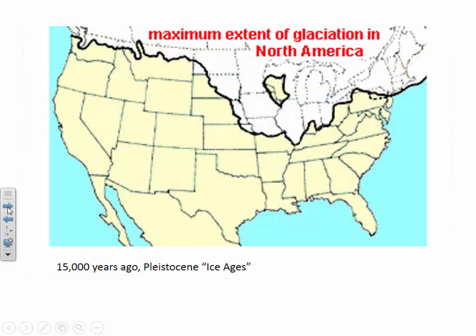The story of Edinburgh Lake begins during a period of time known as the Pleistocene by geologists, but commonly referred to as the Ice Ages. This map shows the maximum extent of glaciation in North America at the height of the last major glacial advance, approximately 15,000 years ago.